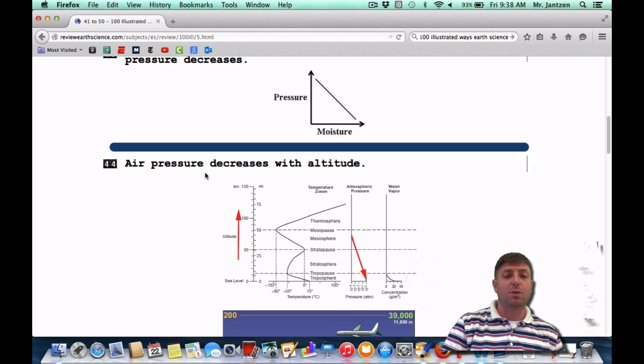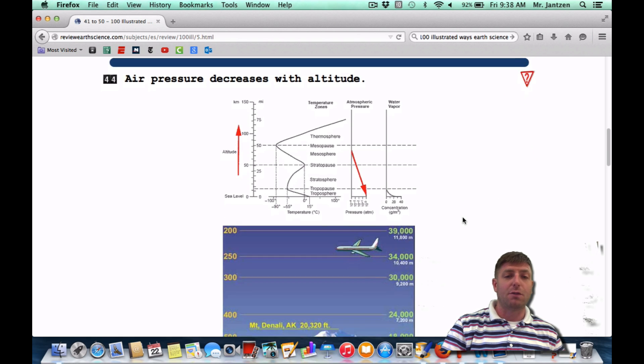Number 44. Air pressure decreases with altitude. So this is your layers of the atmosphere chart from the Earth Science Reference Tables. Just analyzing this real quick, we have the altitude increasing over here. And this kind of funky zigzag line is showing what's happening to the temperature. In the troposphere, where we live, the lowest layer, the higher you go, the colder it gets. Kind of like going to the top of a mountain, it's a lot colder than maybe near sea level. Then in the stratosphere, temperature is actually going to increase. Then when you get into the mesosphere, it's going to decrease again. And then the thermosphere, it's going to increase.